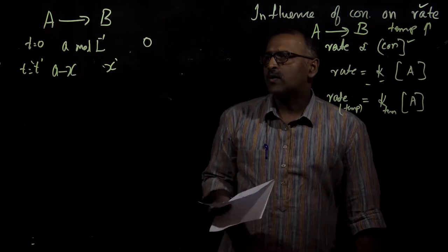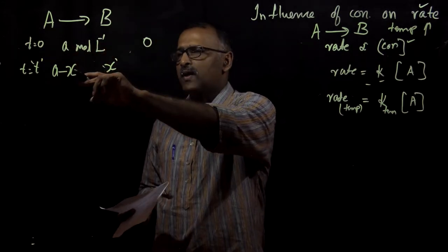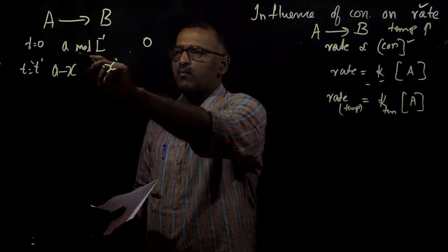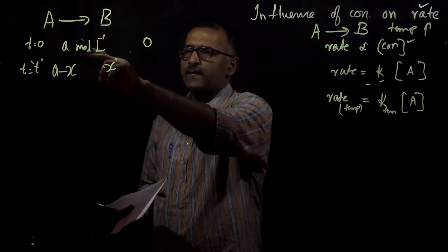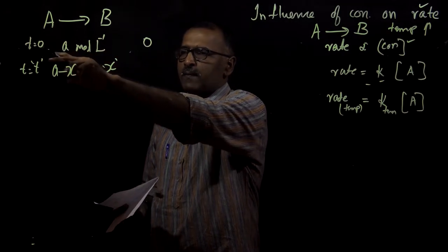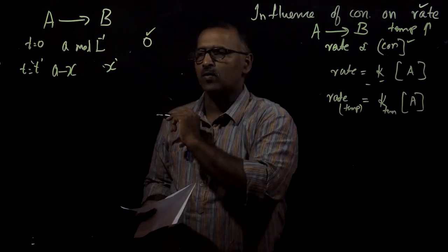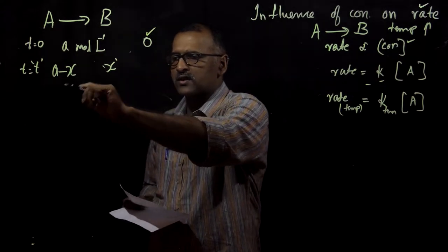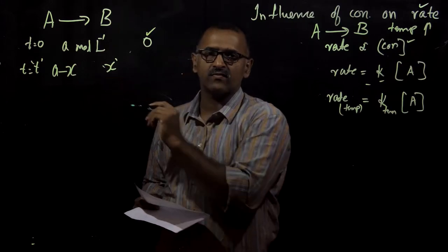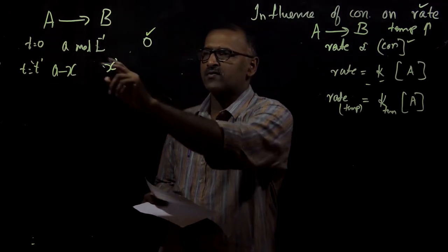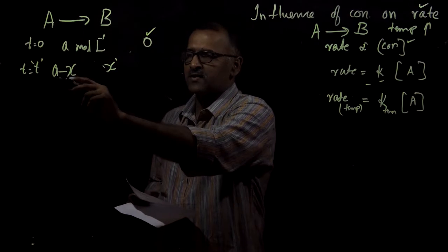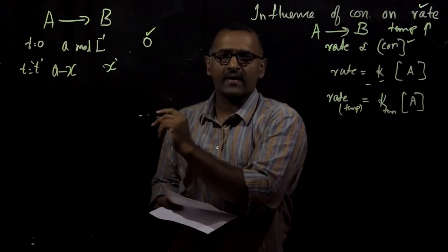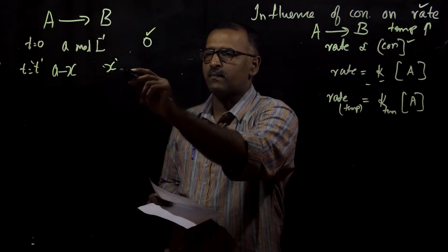Coming to the general reaction A giving B: at time T equal to 0, concentration is A moles per liter, and concentration of B will be 0 moles per liter. At time T equal to T, the concentration of A will be A minus X, meaning X moles of A has been reacted to B. So at time T equal to T, concentration of A is A minus X and concentration of B will be X.